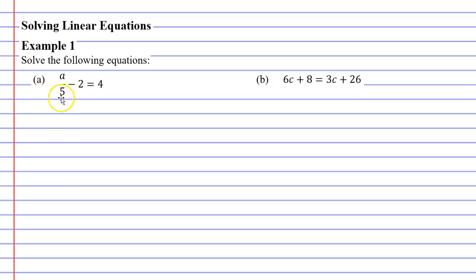Looking at question A, I can either add or subtract first, or I can multiply or divide first. I'll show you both ways. We'll start by adding two to both sides, which will cancel out the minus two, leaving us with A over five on the left. And then four plus two is six.